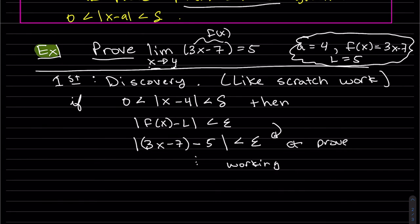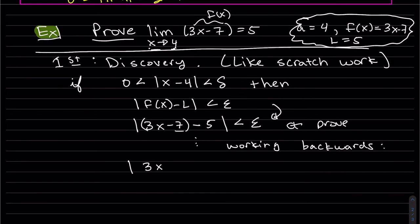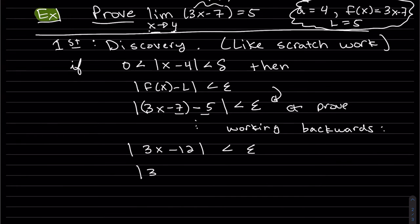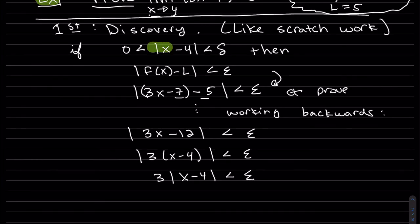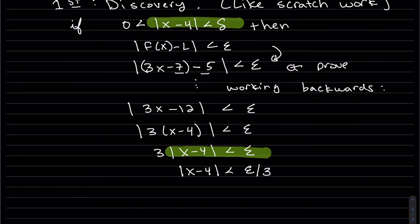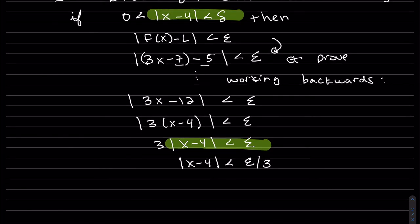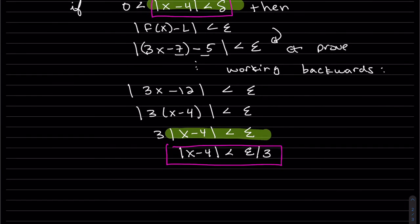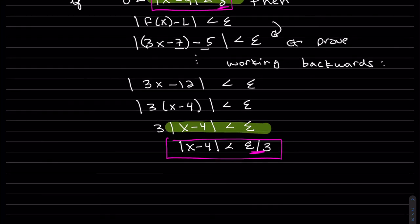Minus 7 minus 5. And we can pull out that 3 because it's positive. And look here, we kind of have some of it. So maybe we want to isolate that |x - 4|. Divide by 3. So it looks like we found our corresponding delta. So we're going to choose δ = ε/3.